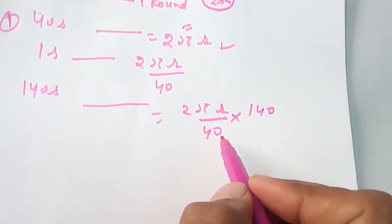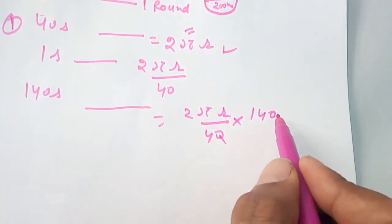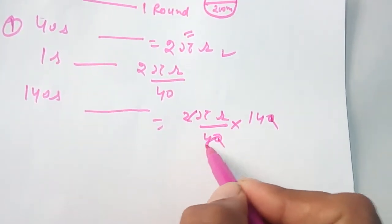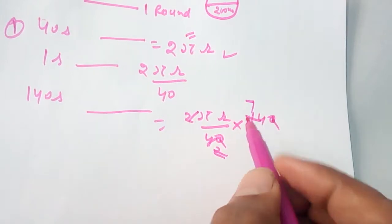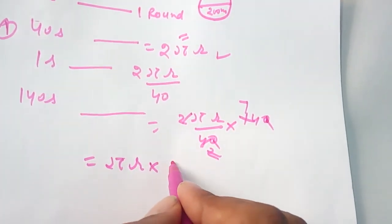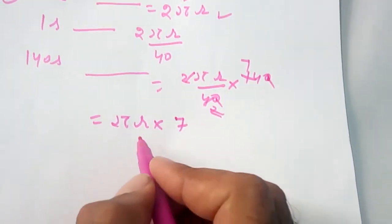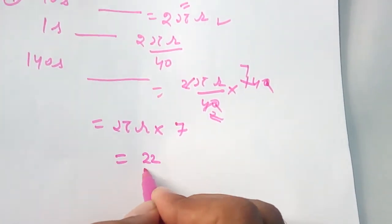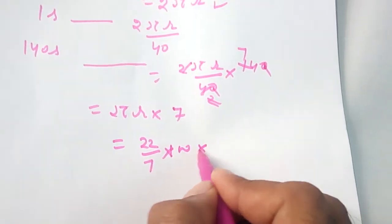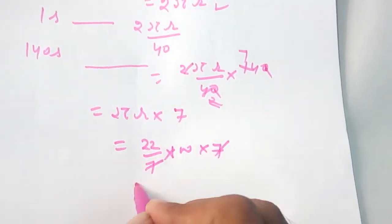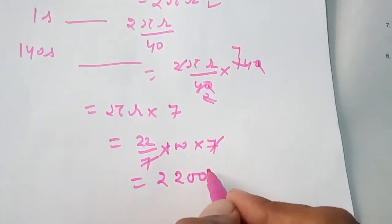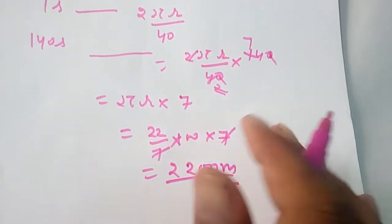Cancel the zeros: 140/40 simplifies. Then 2/4 and 2/7 gives us πr × 7. Putting the values: 22/7 and r is 100, into 7. Cancel 7 with 7. You get the answer 2200 meters. This is the distance.